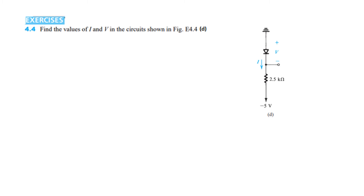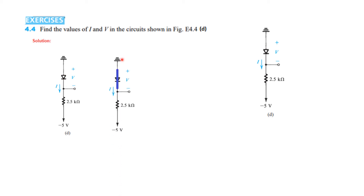Part D: the diode is reversed. The anode of the diode is connected to ground but the cathode is connected to the negative side, therefore this diode will be conducting — forward biased — and so we draw the equivalent circuit. This terminal is connected to ground, therefore negative V will be 0 and therefore V will be 0. For current we write 0 minus minus 5 divided by 2.5, which is 2 milliampere.